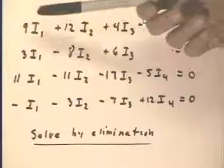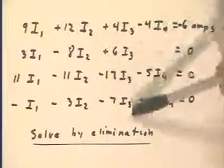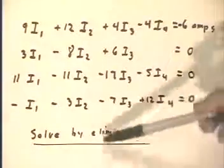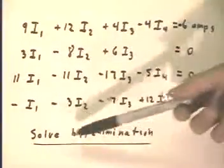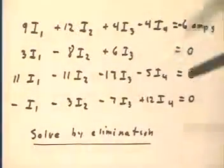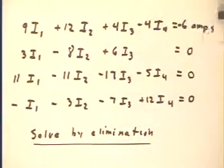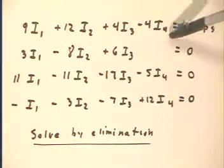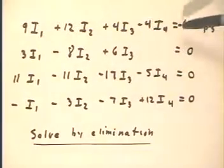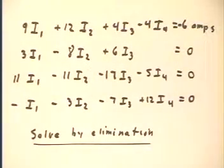Now in this system, we've lined up the I1s, we've lined up the I2s, the I3s, and the I4s to make it easier to solve. And we're going to probably solve this by elimination. Notice the negative six amps on the right-hand side here. It came from the six volts divided by ohms. It was on the left-hand side, and of course, the sign change, and we brought it over here.